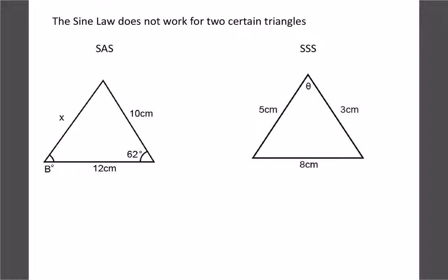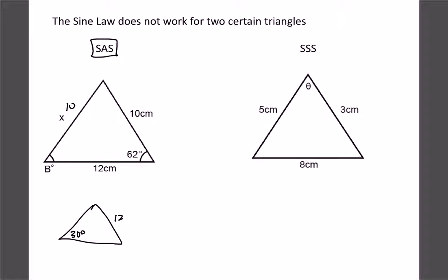There are two cases where the sine law doesn't work. First, side-angle-side — if we have an angle and two sides on either side of it. The sine law only works when you have an angle and the side directly across from it. Second, side-side-side — if you have all three sides but no angles. In either of those cases, the sine law fails and we need another method.